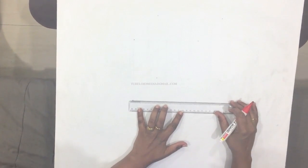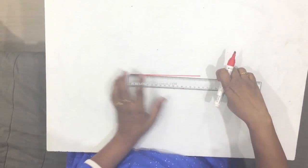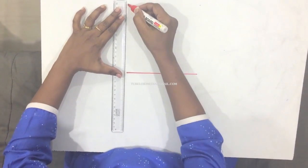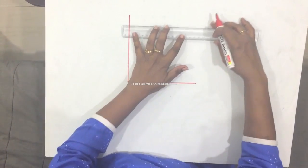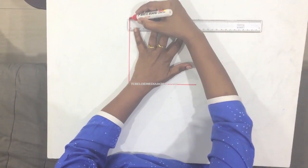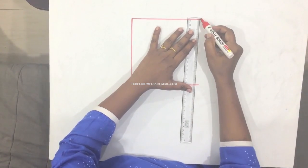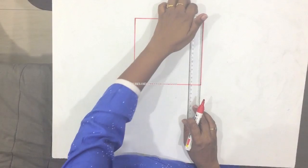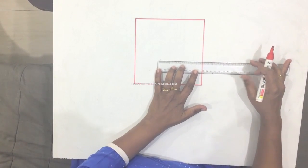So first you are going to draw a square now. Drawing a square. Next is, we are going to draw another square like this.